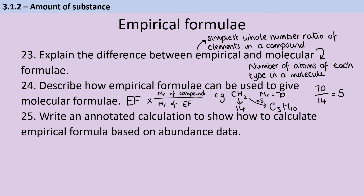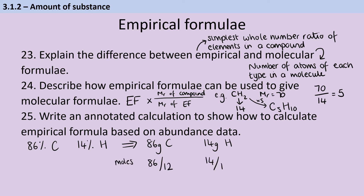If you have abundance data, the easiest approach is to pretend you have 100 grams of compound. For example, if a compound contains 86% carbon and 14% hydrogen, that's 86 g of carbon and 14 g of hydrogen. Use mass ÷ Mr to work out moles: 86 ÷ 12 gives moles of carbon, and 14 ÷ 1 gives moles of hydrogen — that's approximately 7.17 and 14. Putting 7 and 14 in a ratio and simplifying gives 1:2, so the empirical formula is CH₂.